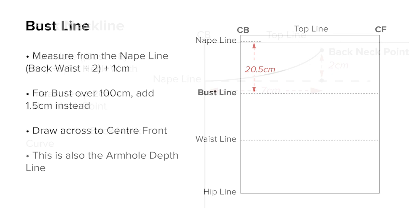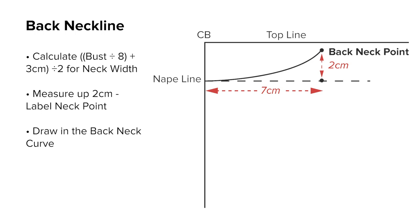The back neck line. Calculate the back neck width to find the neck point. To do this, divide the bust measurement by 8, add 3 centimeters, and halve the result for the back neck width. For a bust of 88 centimeters, the back neck width is 7 centimeters. Another method is to divide the neck size by 5. Measure along the nape line and square up 2 centimeters. Label this the back neck point. Draw in a shallow back neck line curve, flattening out at center back.